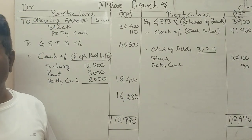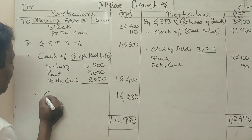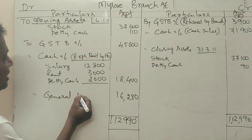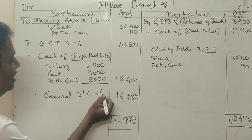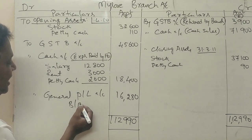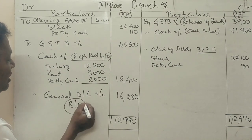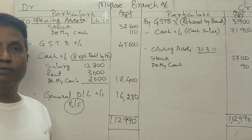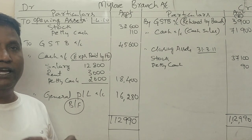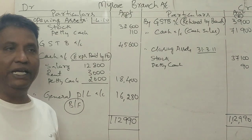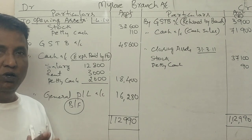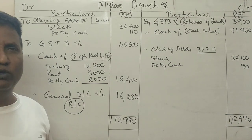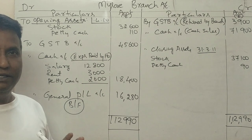The final total comes to approximately 1,12,280 rupees. This balancing figure is the profit, which is transferred to the profit and loss account for the branch.